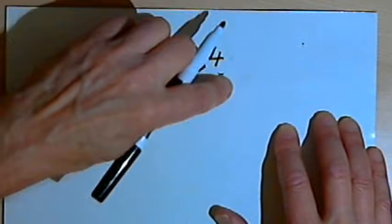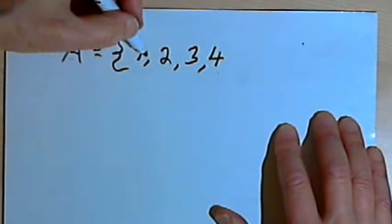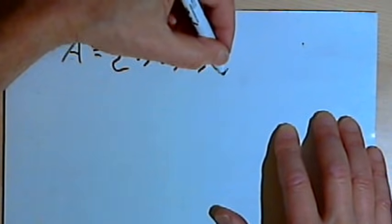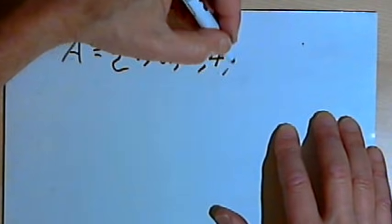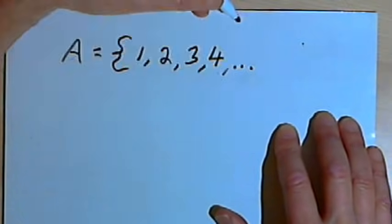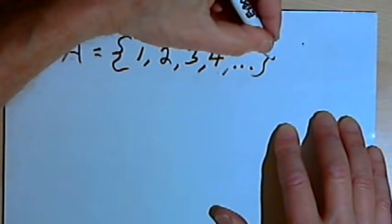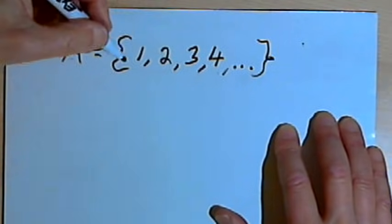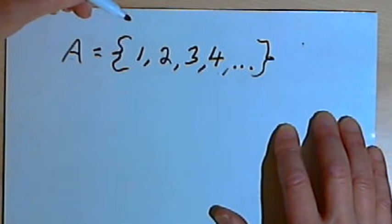If I want to have all the numbers starting at 1, all the natural numbers, and continuing infinitely, I could write three dots, what we call an ellipsis, and that would mean I start at 1 and I just count up to infinity.